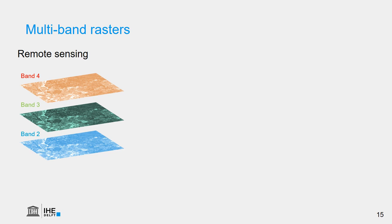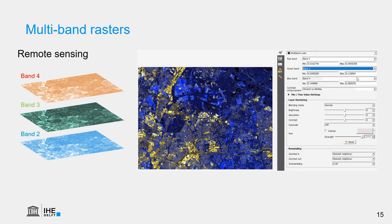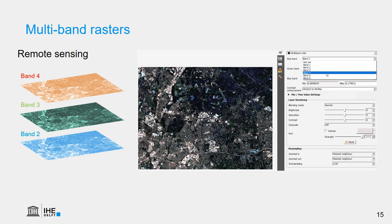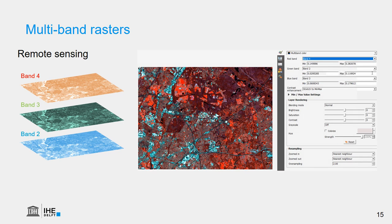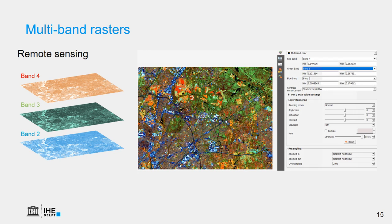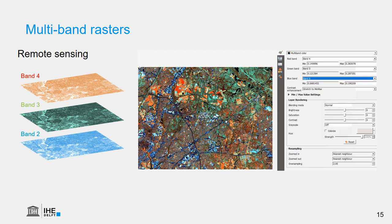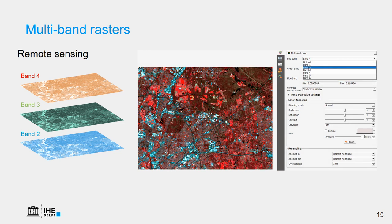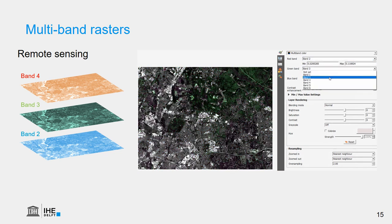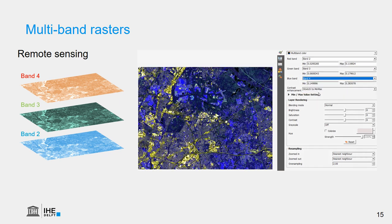We can combine this in a GIS or remote sensing software and look at different combinations of these bands, and they give us the indication of different properties of reflection. In this lecture, we will limit ourselves to single-band rasters, where each individual layer is a certain property of the landscape.